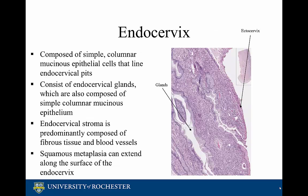The endocervix is composed of simple columnar mucinous epithelial cells that line the endocervical pits. The endocervix also has glands composed of simple columnar mucinous epithelial cells. The endocervical stroma is predominantly composed of fibrous tissue and blood vessels. It is also important to note that squamous metaplasia of the transformation zone can extend along the surface of the endocervix.